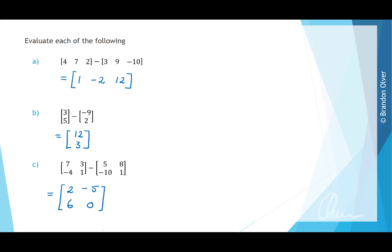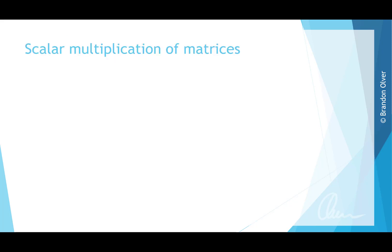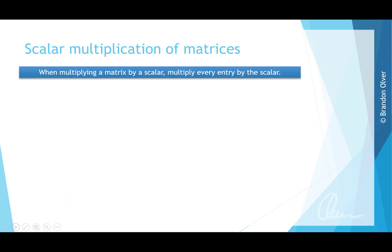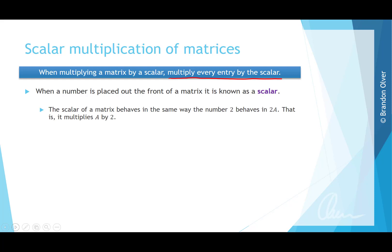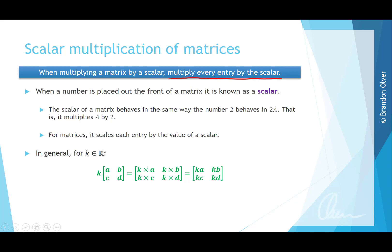We can also multiply a matrix by a scalar. When we multiply a matrix by a scalar, we multiply every entry by that scalar. A number placed at the front of a matrix is known as a scalar — it scales every entry by that value. In general, for a scalar K which is an element of the real numbers, K multiplied by the matrix gives K multiplied by each entry.